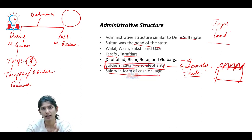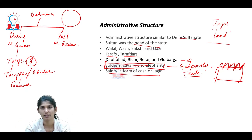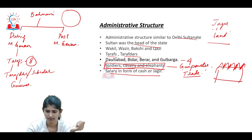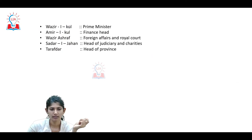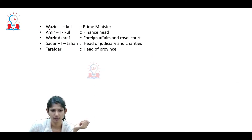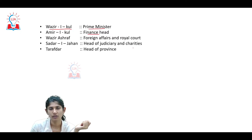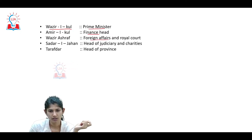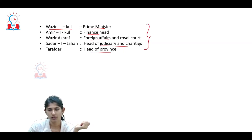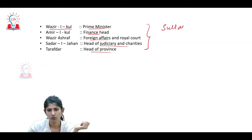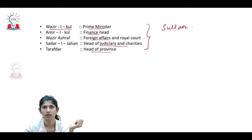The administrative hierarchy included the prime minister, finance minister, foreign affairs minister, head of judiciary, head of charities, and head of provinces - all under the Sultan at the top.